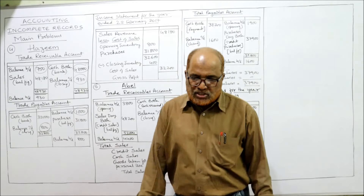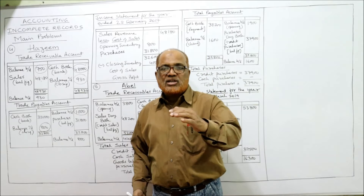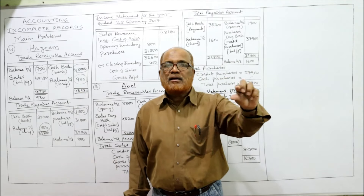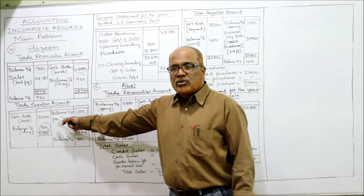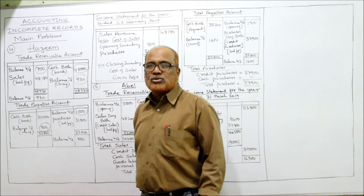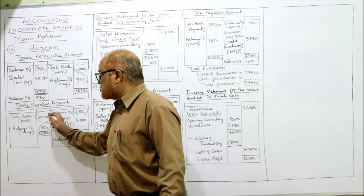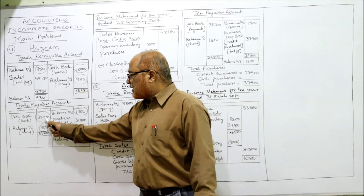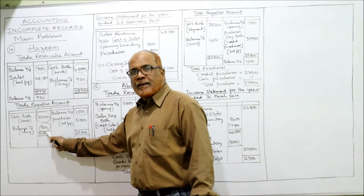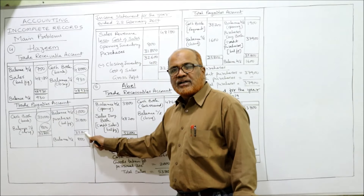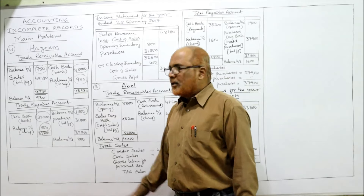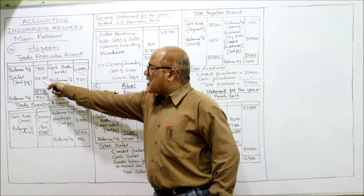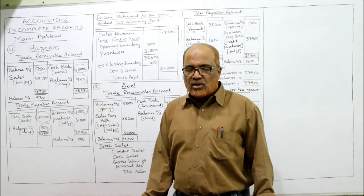Cash paid to payables is 32,000. The entry is: payables account debit, bank account credit. So 32,000 goes on the debit side. Now balancing: debit side 32,000 plus 800 equals 32,800. From 32,800 deduct opening balance of 1,000 — giving 31,800 as purchases.